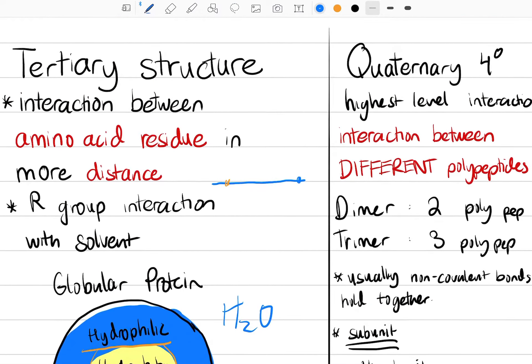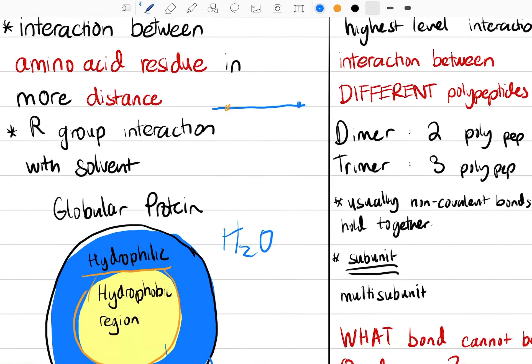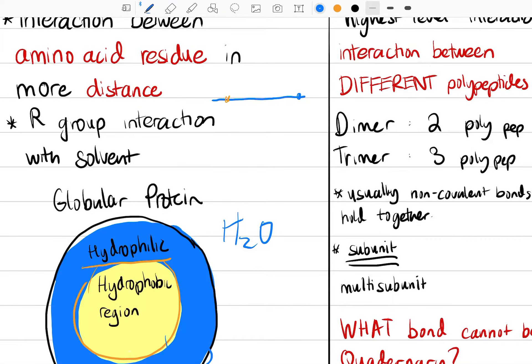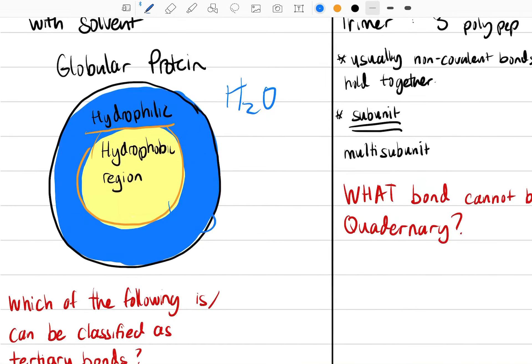We have just discussed what tertiary structures are, basically hydrophilic and hydrophobic interactions, but really interactions between amino acid residues in a more distant manner, so characteristics coming together.